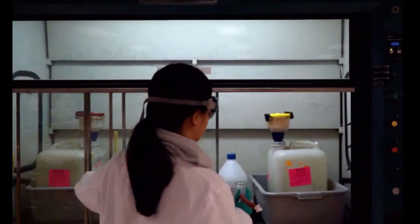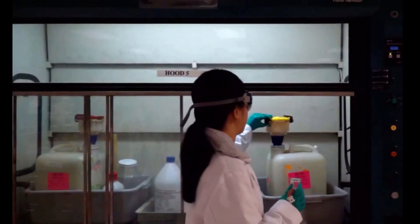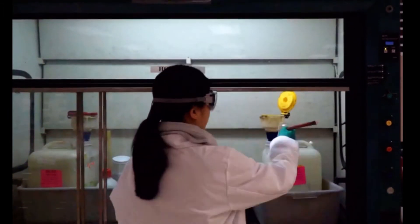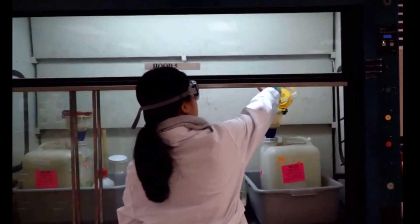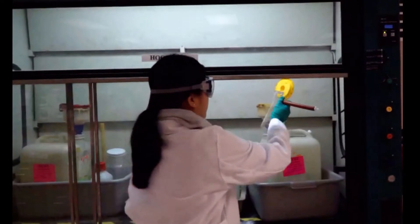You may dump the liquid from the filtration flask into the trap flask. Then you can take that flask and dump it into the waste bin. Always close waste receptacles when you're done using them.